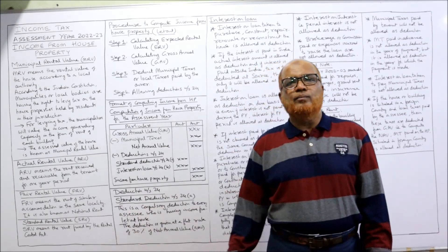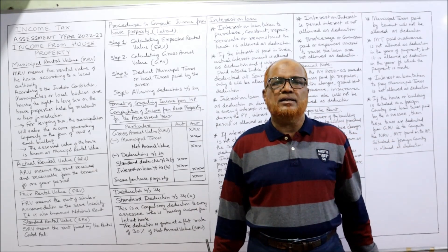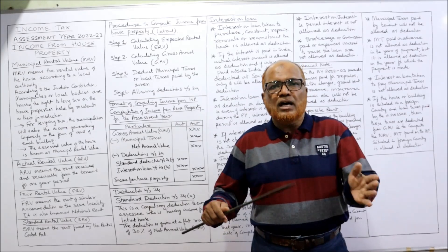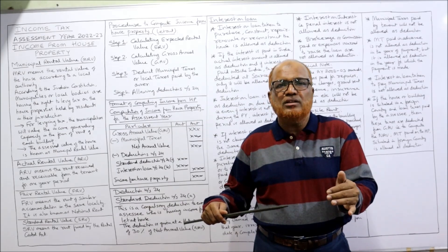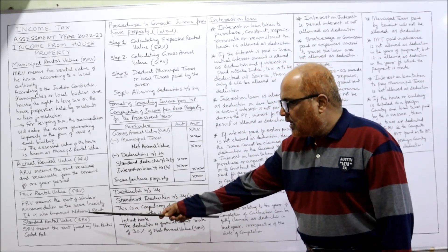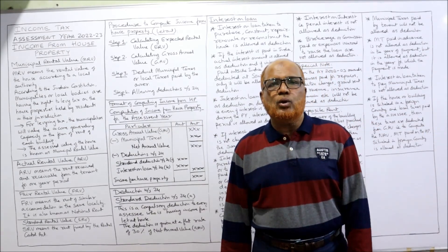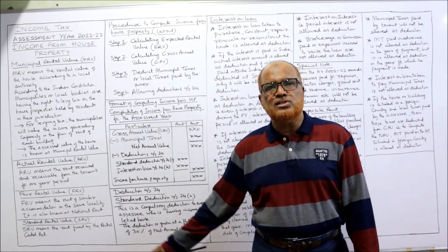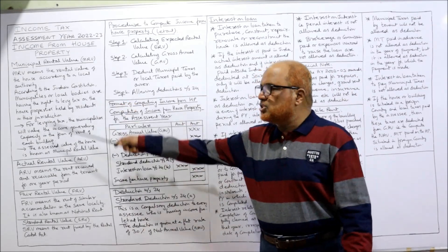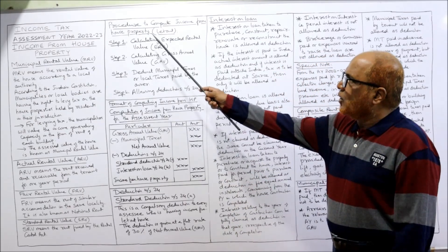That rental value fixed by municipal or local authorities is called MRV. Next, actual rental value is the actual rent received or receivable from the tenant. Fair rental value is the rent that similar accommodations in the same locality or area are fetching. Standard rental value is the rental value fixed by the Rent Control Act.